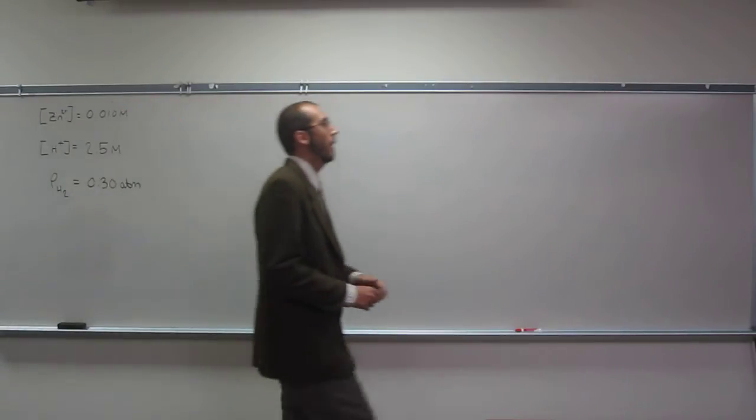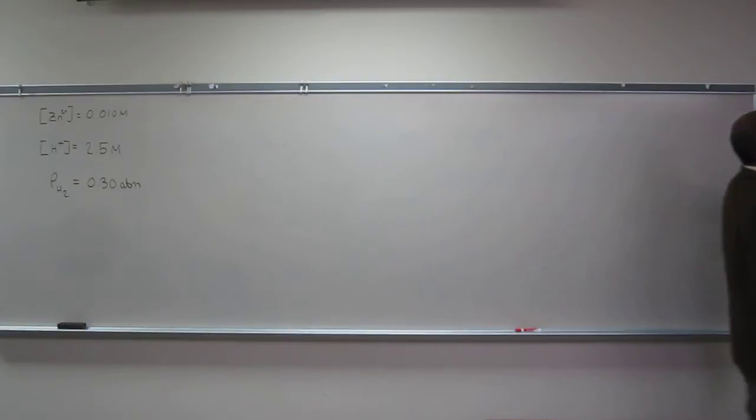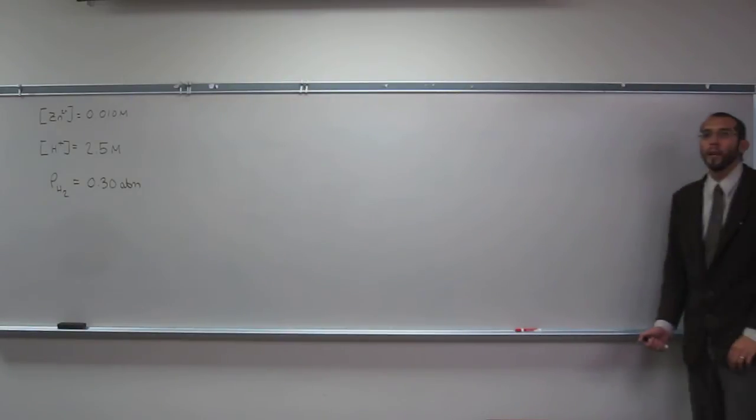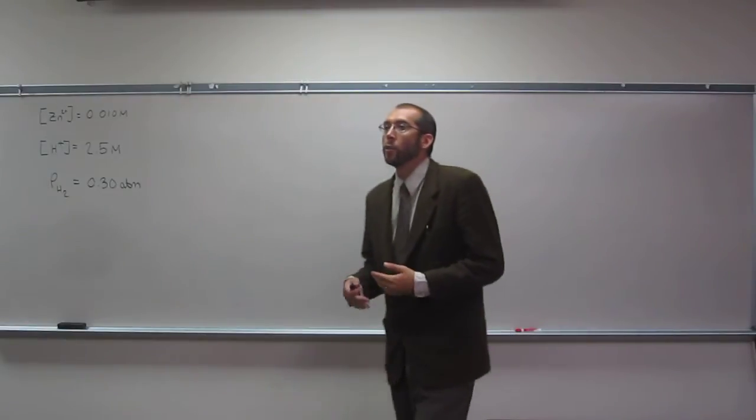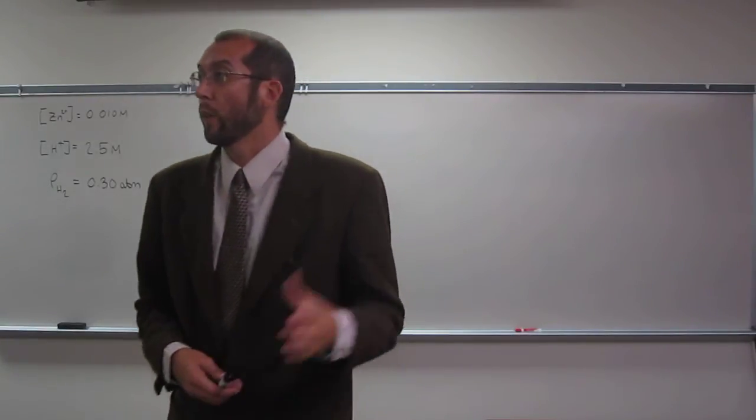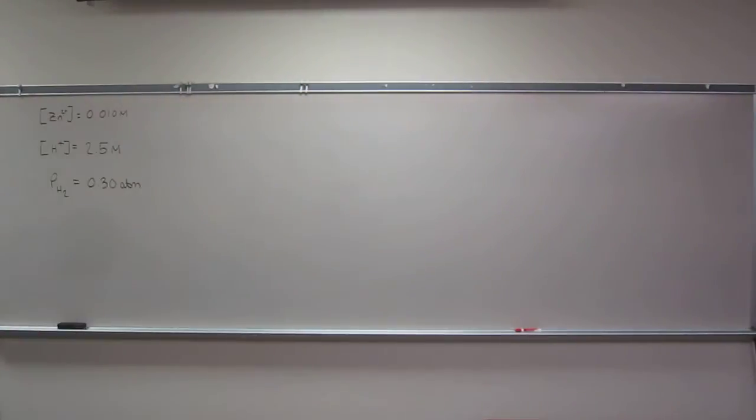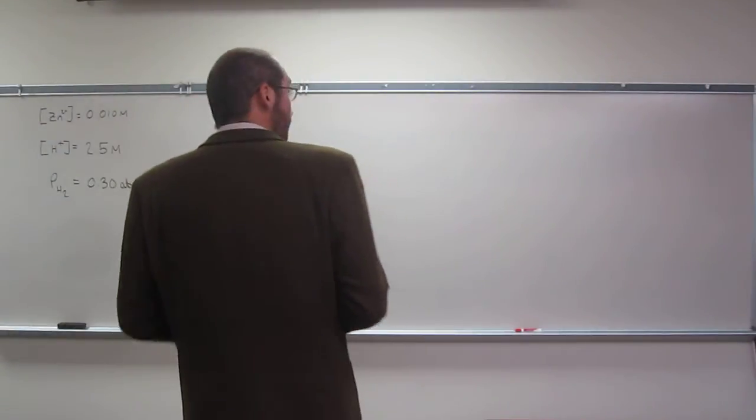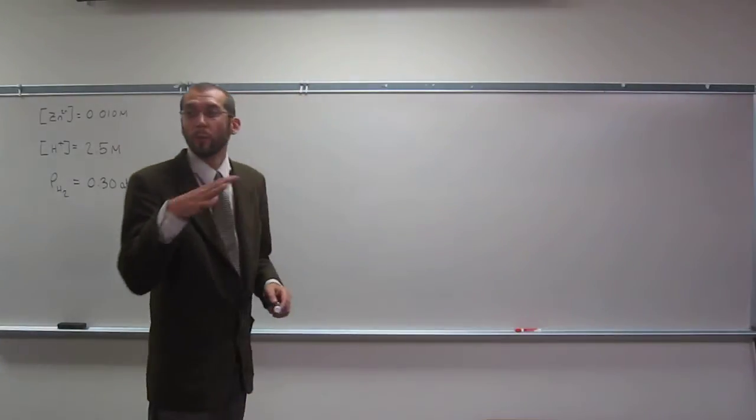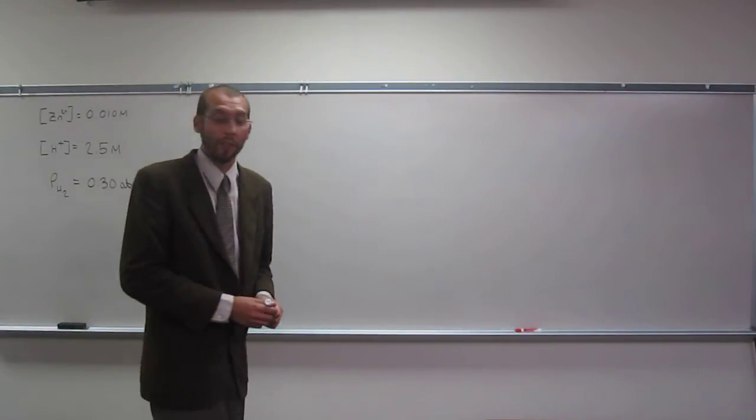So calculate the cell potential at 298.25 kelvin. Okay, so remember, if you're going to do it at 25 degrees Celsius or that 298 kelvin, that's going to be the Nernst equation that's reduced to that 0.0592 volts per n. So we're using the Nernst equation in this particular problem.